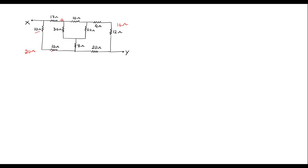From this circuit, consider this node, this node, and this node. Between these three nodes, 10 ohm, 30 ohm, and 20 ohm are connected in delta fashion.